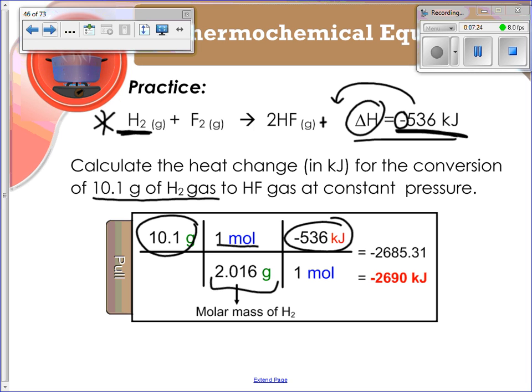So I put the negative 536 in here, work it out like stoichiometry, and get negative 2690 kilojoules, and that's using significant figures.